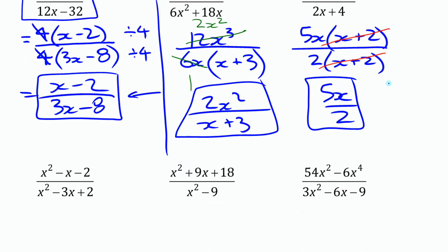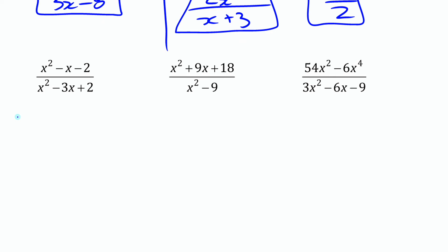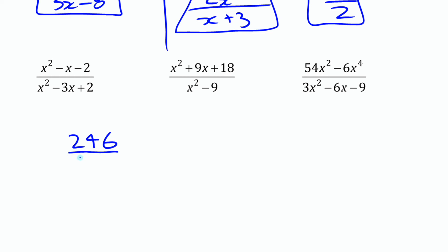For the last three examples, it will be hard to reduce without factoring first. You might be tempted to cross off matching terms like x² and x² or the 2's, but you can't cross off part of something that has more than one term. This trinomial has three terms; you cannot cross off part of a trinomial, just like you can't cancel a single digit out of a multi-digit number like 246 divided by 33. You need a factor of the entire expression, not just part of it.